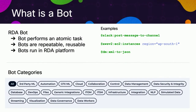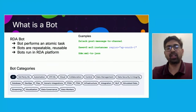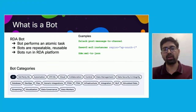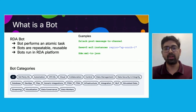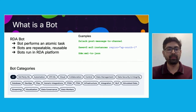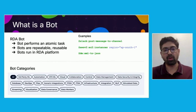You may be wondering — what is a bot? A bot performs an atomic task. These bots are repeatable and reusable, and they run in the RDA platform. For example, if you want to post a message to a Slack channel, we have a bot — you invoke it just by using the name of the bot. If you want to get data from an AWS environment, you can use the AWS bot and specify a region as a parameter. We have many different categories of bots listed in the bot library page, including connectivity to IT operational tools, data visualization, AI/ML, NLP, and all data management bots.